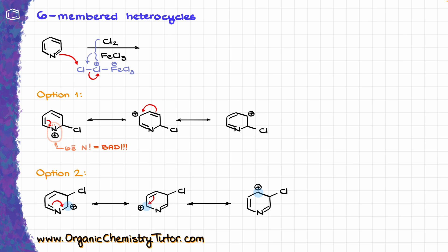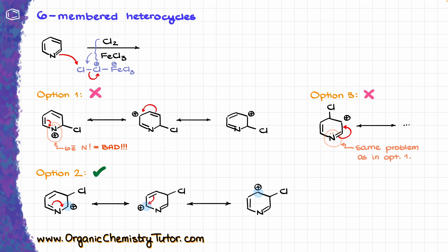When we move to option three, we are going to have the same problem — a nitrogen with six electrons in one of the resonance contributors, so option three is not a good option for us either. Which means that in this case we are going to go with the lesser of three evils: option two. Our final product is going to have the chlorine at the third position from the heteroatom. So when it comes to 6-membered rings — and most typically you are going to be seeing pyridine — the substitution goes into the C3 position. The resonance here is the key. If you are ever in doubt, just draw and assess those resonance contributors and you will get your answer, the same way we dealt with directing effects from electron-donating and withdrawing groups.